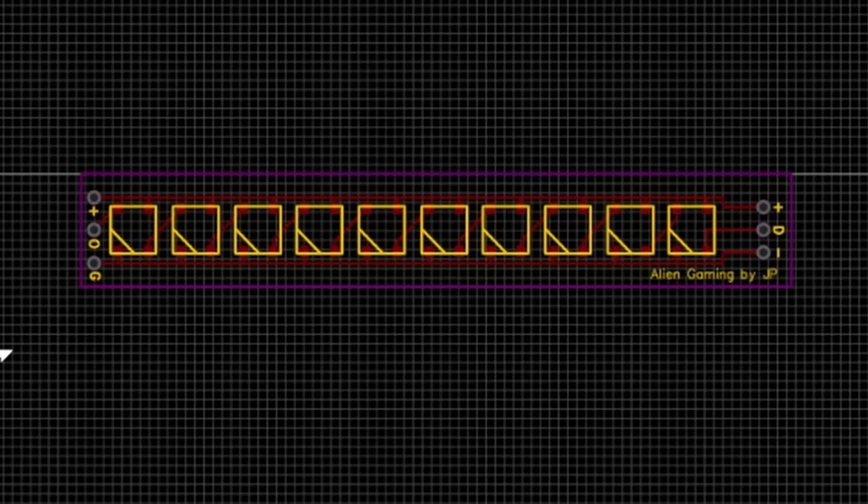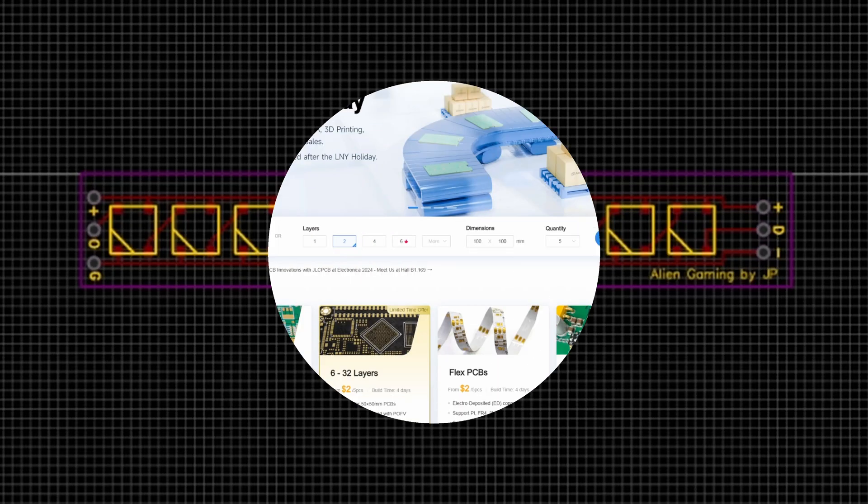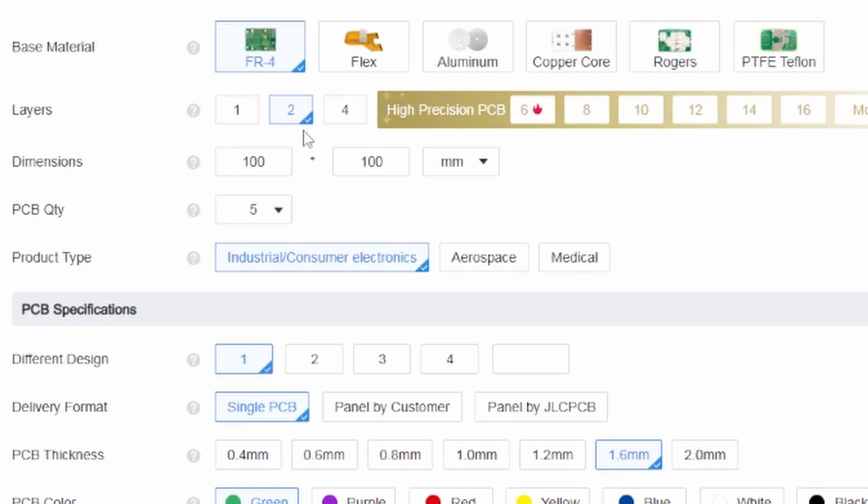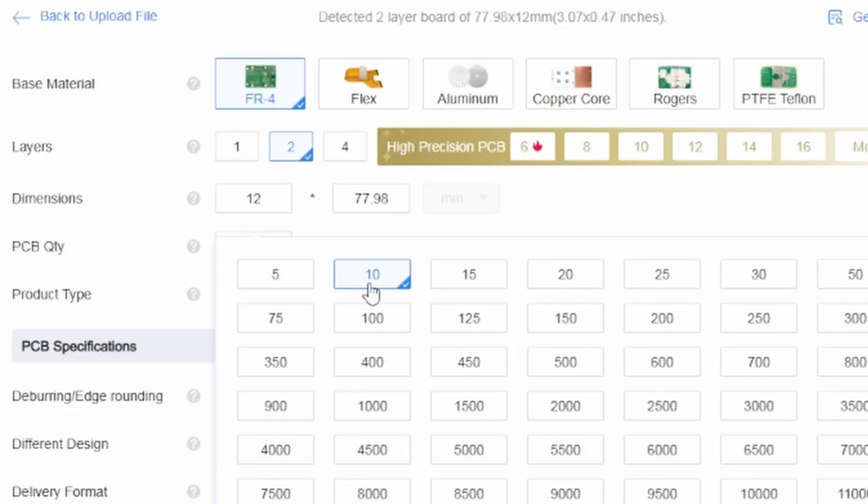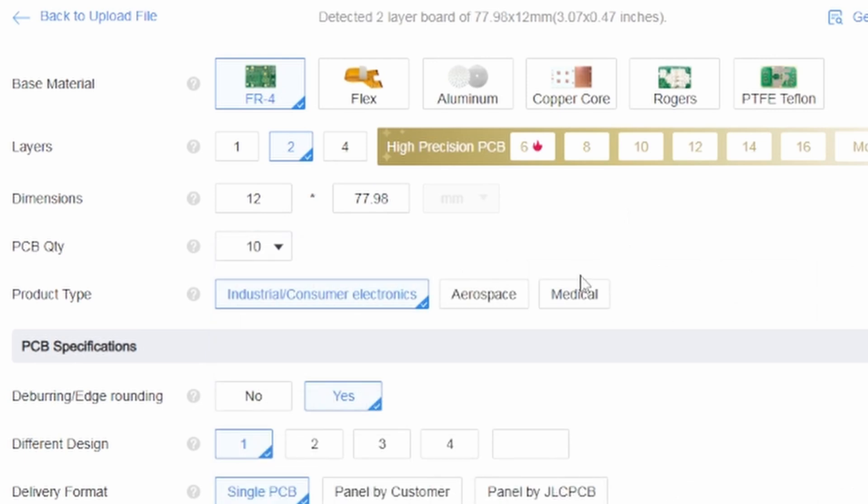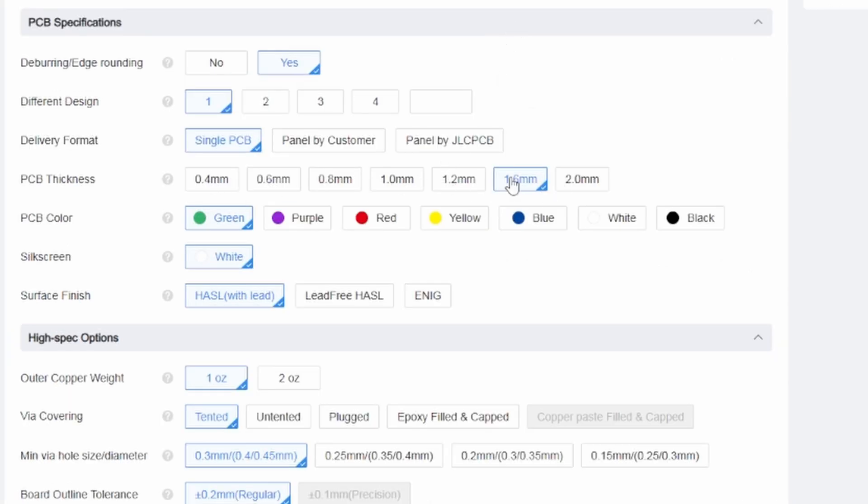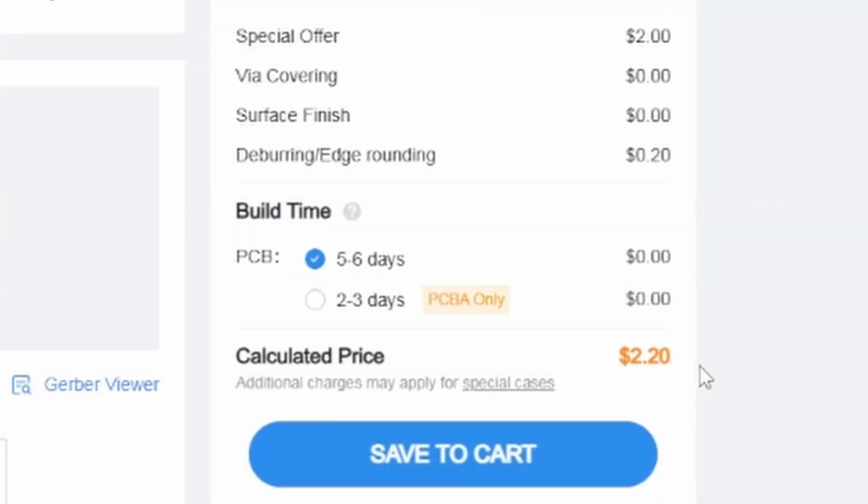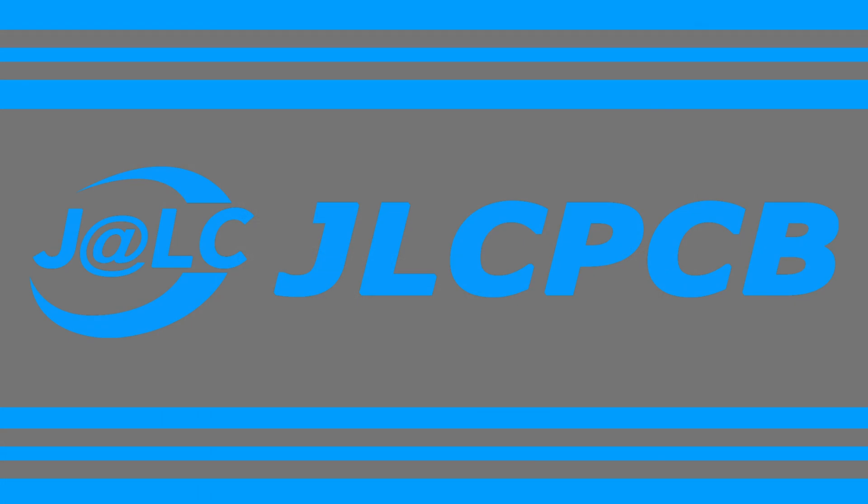This PCB is a basic RGB one so we'll grab the Gerber files, drag and drop them onto JLCPCB, and then we can go ahead and customize the order - how many layers, the size, the quantity. And of course we can go for five for as little as two dollars, 1.6 millimeters because that's what's required, and you can obviously choose the color. Loads of other options but as you can see, two dollars and twenty cents. So why not check out the links in the description for more information and the latest offers and see how much you can save when bringing your ideas to life.